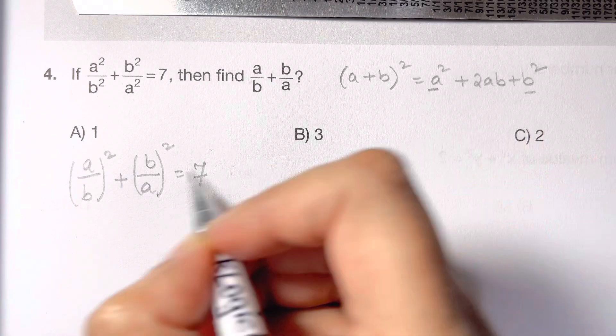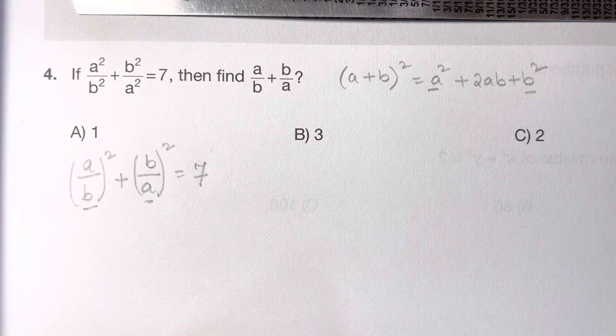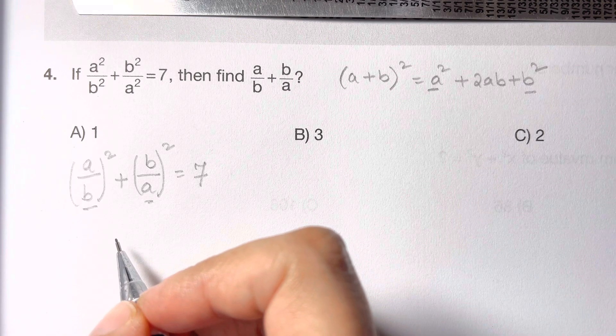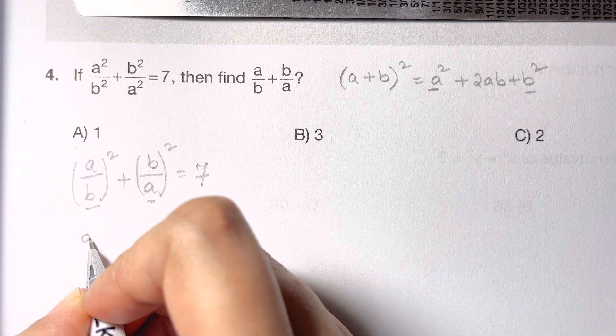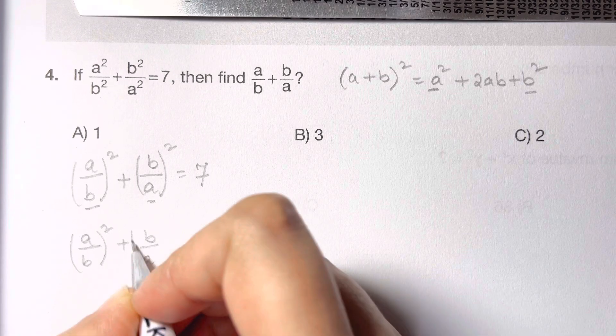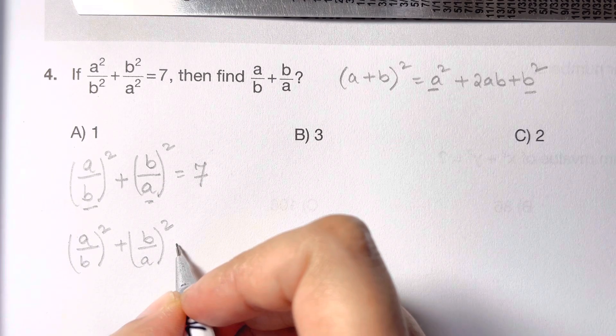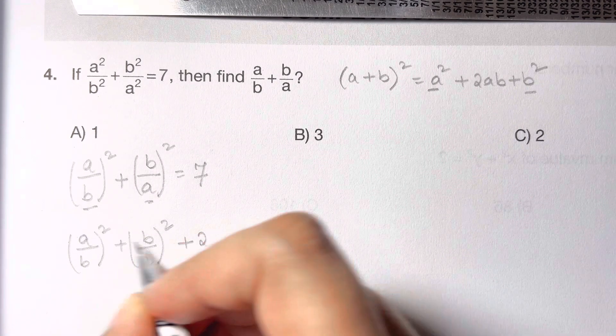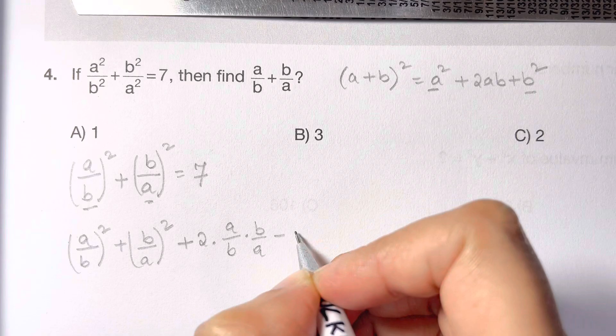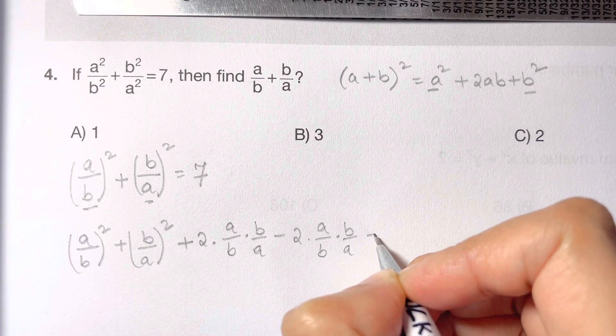So we have a² and b². This is a² and this is b². Now we're going to apply this. What we have to do here is (a over b)² plus (b over a)². Now I'm going to add and subtract 2ab, that will give me plus 2 times a over b times b over a and also I'm going to subtract a over b times b over a, which equals 7.